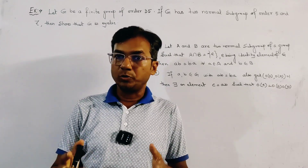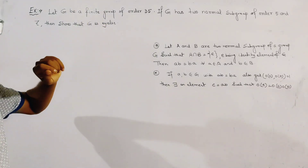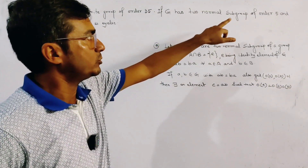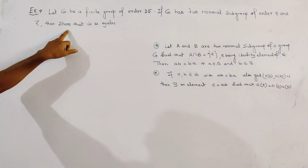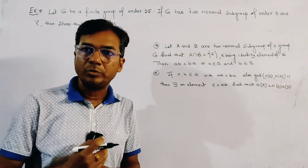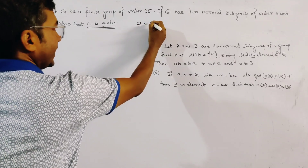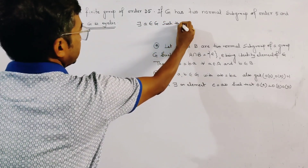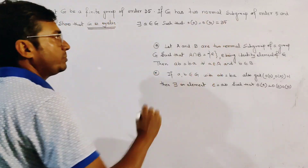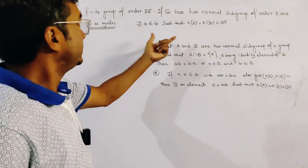An important problem of group theory relating to cyclic groups — this is from a previous year question. The problem is: let G be a finite group of order 35, and G has two normal subgroups of order 5 and order 7. Then show that the group is cyclic. To prove G is cyclic, we need to show there exists an element A in G such that the order of A equals the order of G, that is, order of A equals 35. If there exists an element of order 35, then the group is cyclic.